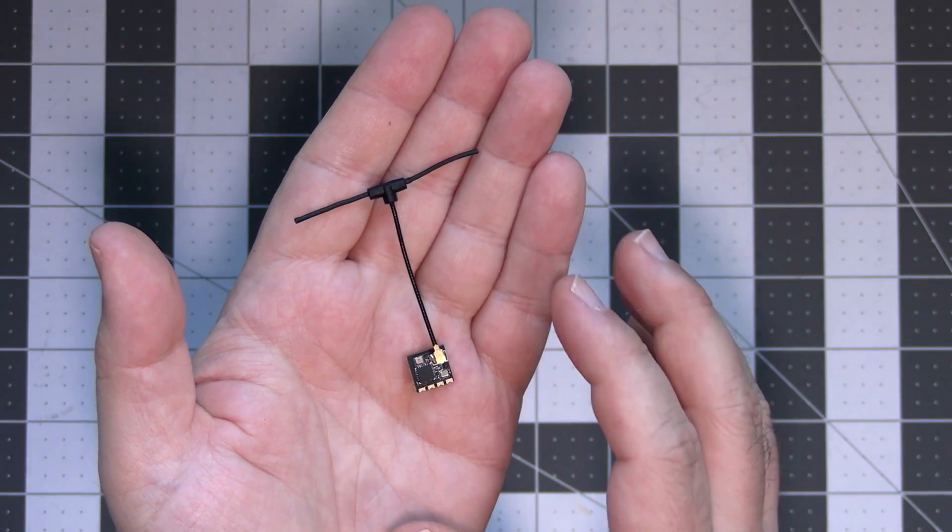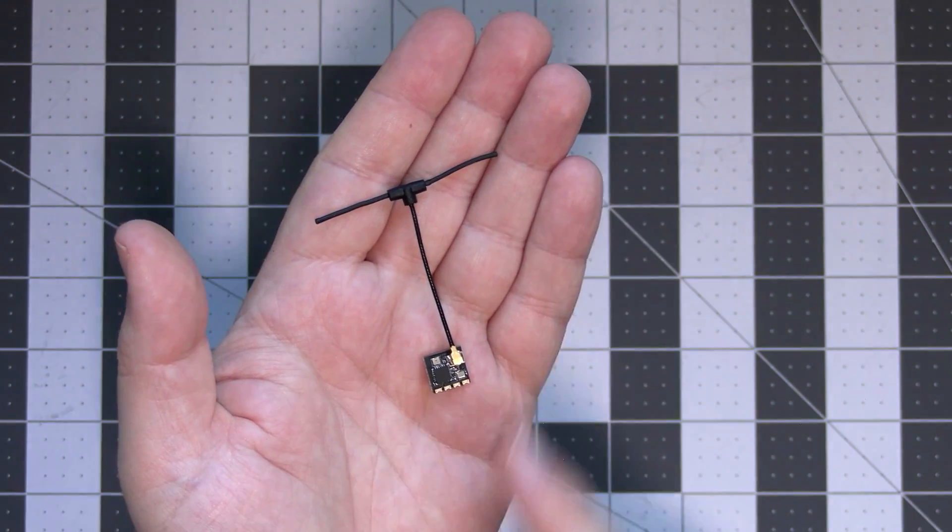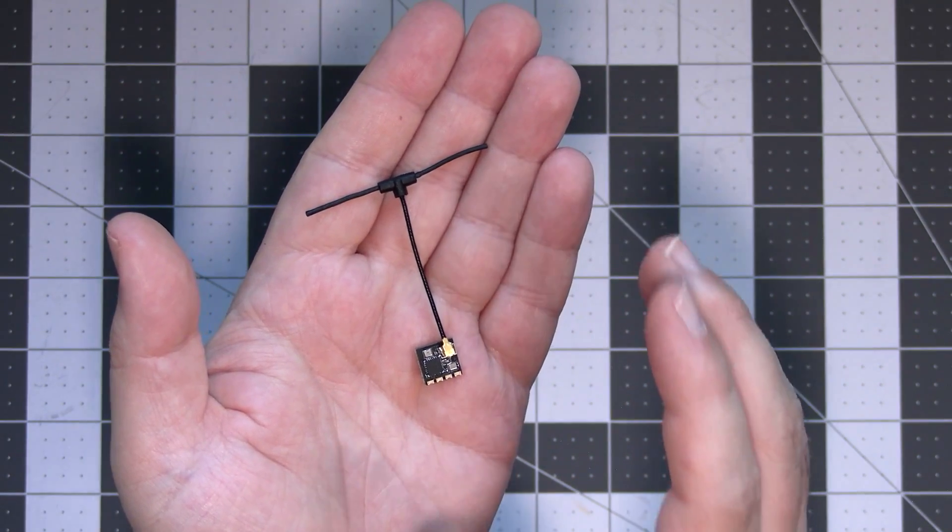This is the standard ExpressLRS 2.4 GHz receiver. Very small, very light and with a very impressive range.